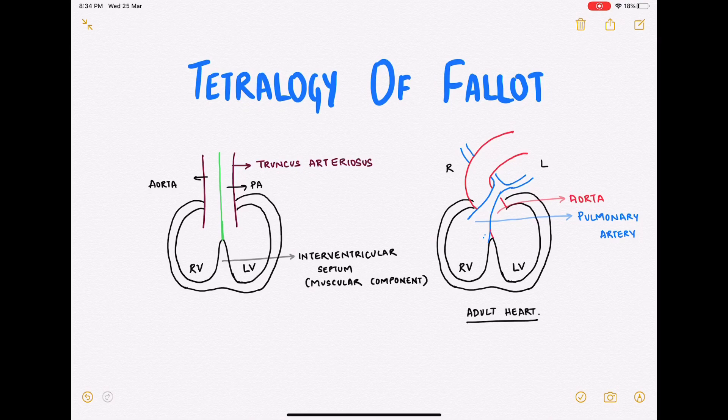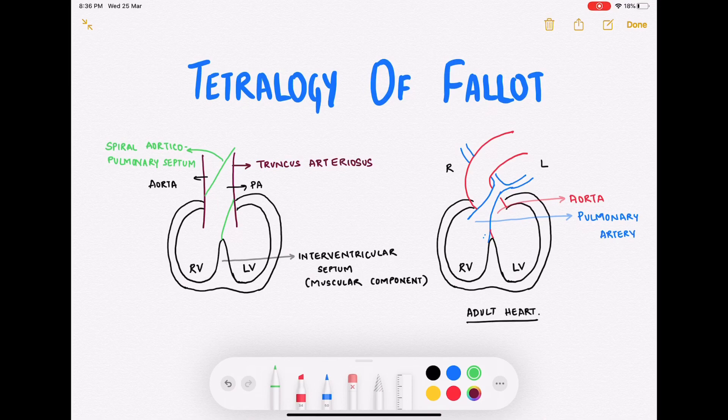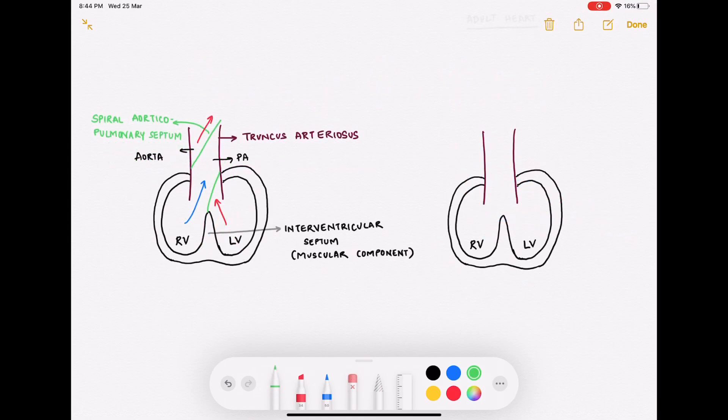So if not vertical, how else should this aorticopulmonary septum form? It must form spirally, like shown in the diagram. Now when it forms like this, the blood from the right ventricle goes up like this, so this forms your pulmonary artery, while the blood from your left ventricle goes up like this and that forms the aorta.